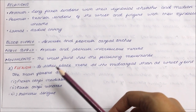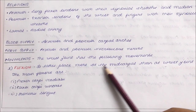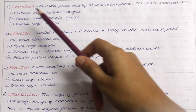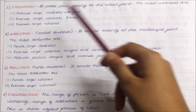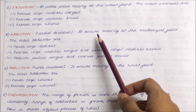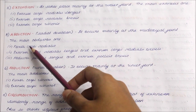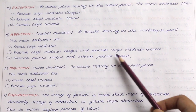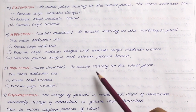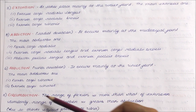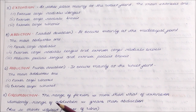To summarize the movements: flexion takes place more at the mid carpal joint, with main flexors being flexor carpi radialis, flexor carpi ulnaris and palmaris longus. Extension takes place mainly at the wrist joint, with main extensors being extensor carpi radialis longus, extensor carpi radialis brevis and extensor carpi ulnaris. Radial deviation occurs mainly at the mid carpal joint, with main abductors including flexor carpi radialis, extensor carpi radialis longus, extensor carpi radialis brevis, abductor pollicis longus and extensor pollicis brevis. Ulnar deviation occurs mainly at the wrist joint, with main adductors being flexor carpi ulnaris and extensor carpi ulnaris. In circumduction, the range of flexion exceeds extension, and adduction exceeds abduction due to the shorter styloid process of the ulna.